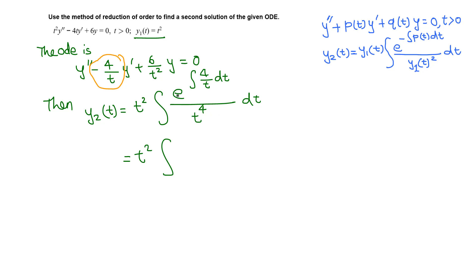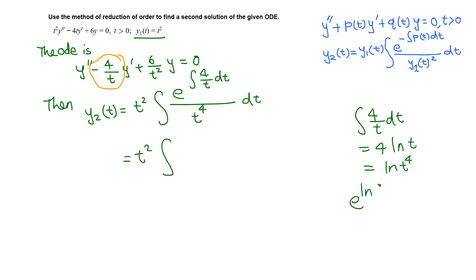The integral of 4/t is 4·ln(t) — since t is positive, no absolute value is needed — which equals ln(t⁴). So the numerator is e^(ln(t⁴)), and since e^(ln(anything)) equals that thing, this simplifies to t⁴. Thus we have t⁴ in the numerator over t⁴ in the denominator, which cancel to give 1.